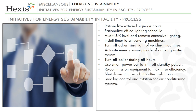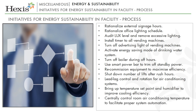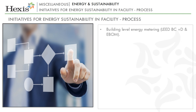Further process initiatives include: lead-lag control and rotation for air conditioning systems; raising temperature set points and humidifier settings to improve cooling efficiency; centrally controlling room air conditioning temperature for proper system automation; setting and fixing refrigerator temperatures; building-level energy metering (LEED BC+D and EBOM); and using power analyzers to monitor power efficiency.